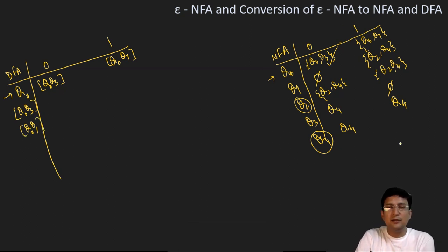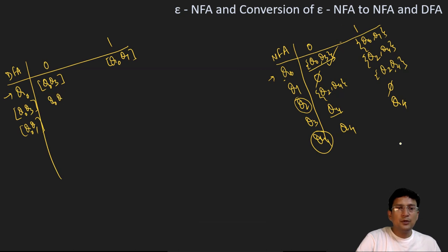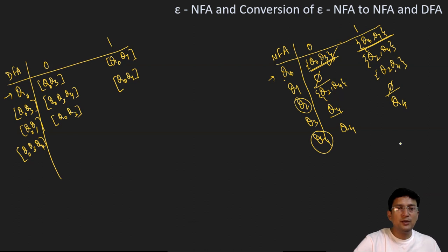q0q3 on getting 0: q0 leads to {q0, q3} and q3 leads to q4, so the union gives {q0, q3, q4} — this is a new state. q0q3 on 1: it leads to {q0, q1} with q3 leading nowhere, so the union is {q0, q1} — not a new state, already defined. q0q1 on 0: q0 leads to {q0, q3} and q1 leads nowhere, so the union is {q0, q3} — not a new state, already defined.